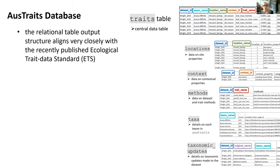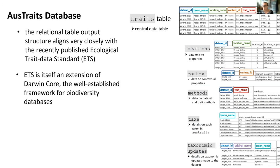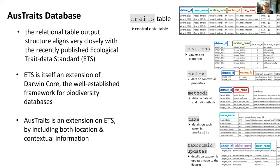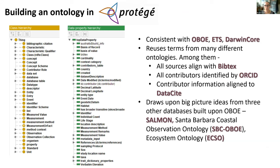When we look at our output table, it also aligns remarkably closely with another recently published ontology: the Ecological Trait Data Standard (ETS), which is itself an extension of Darwin Core — the well-established framework for biodiversity databases. ETS has quite similar tables to ours with quite similar headers. Ours is actually an extension in that ETS doesn't provide the detailed information on locations or context that we are able to capture. I've built an ontology in Protégé — I'm very much a novice and welcome feedback — consistent with OBOE, the Ecological Trait Data Standard, and Darwin Core.